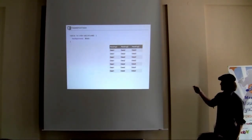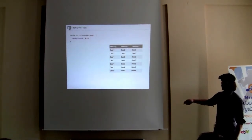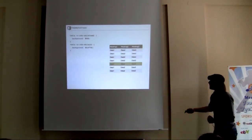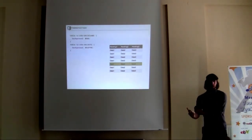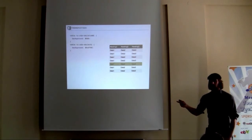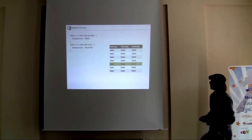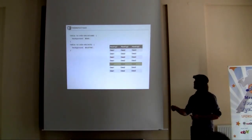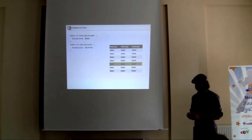You can use 'odd' and 'even' in nth-child, and you can put a specific number there — for example, 5 gets the fifth element, which I made yellow. You can also do calculations with it — for example, to target every fifth line so it takes the 5th, 10th, 15th, 20th, and so on.